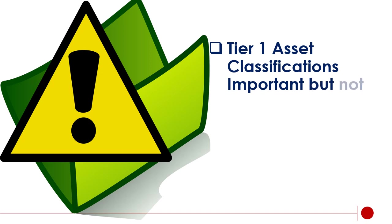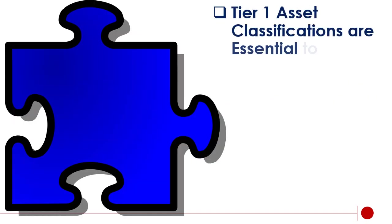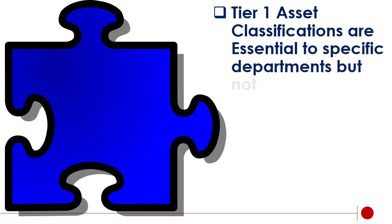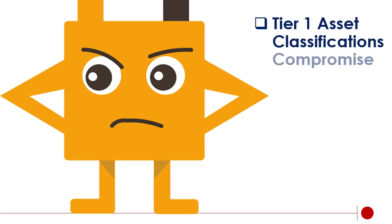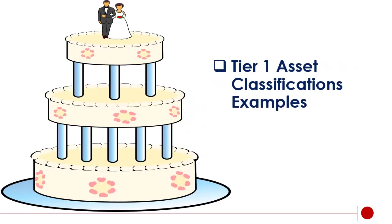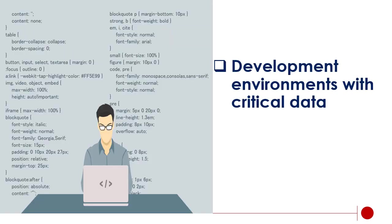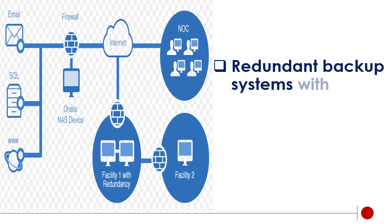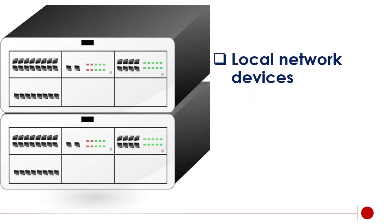Tier 1 asset classifications are important but not necessarily critical. They are essential to specific departments but not to the entire business. A compromise would have a moderate impact on the business. Examples include development environments with critical data, redundant backup systems with critical data, department file shares, and local network devices such as switches, routers, firewalls, and segmentation devices.